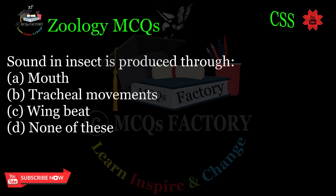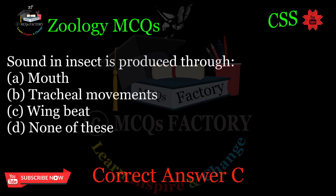Sound in insects is produced through: A. Mouth. B. Tracheal movements. C. Wingbeat. D. None of these. Correct answer: C.